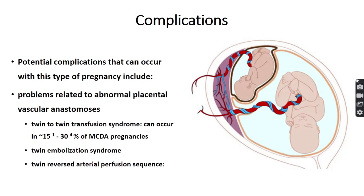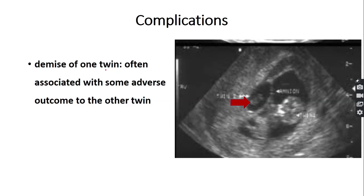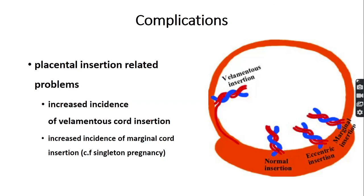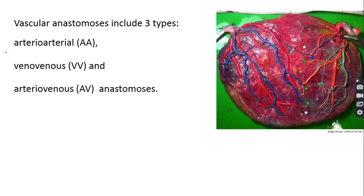Complications of monochorionic diamniotic twin pregnancy include: twin-to-twin transfusion syndrome, twin embolization syndrome, twin reversed arterial perfusion (TRAP) sequence, demise of one twin, growth restriction of one twin due to less nutrition, and placental insertion abnormalities such as velamentous insertion and marginal insertion. Abnormal anastomoses are also seen: arterial-arterial, venous-venous, and arterial-venous anastomoses.